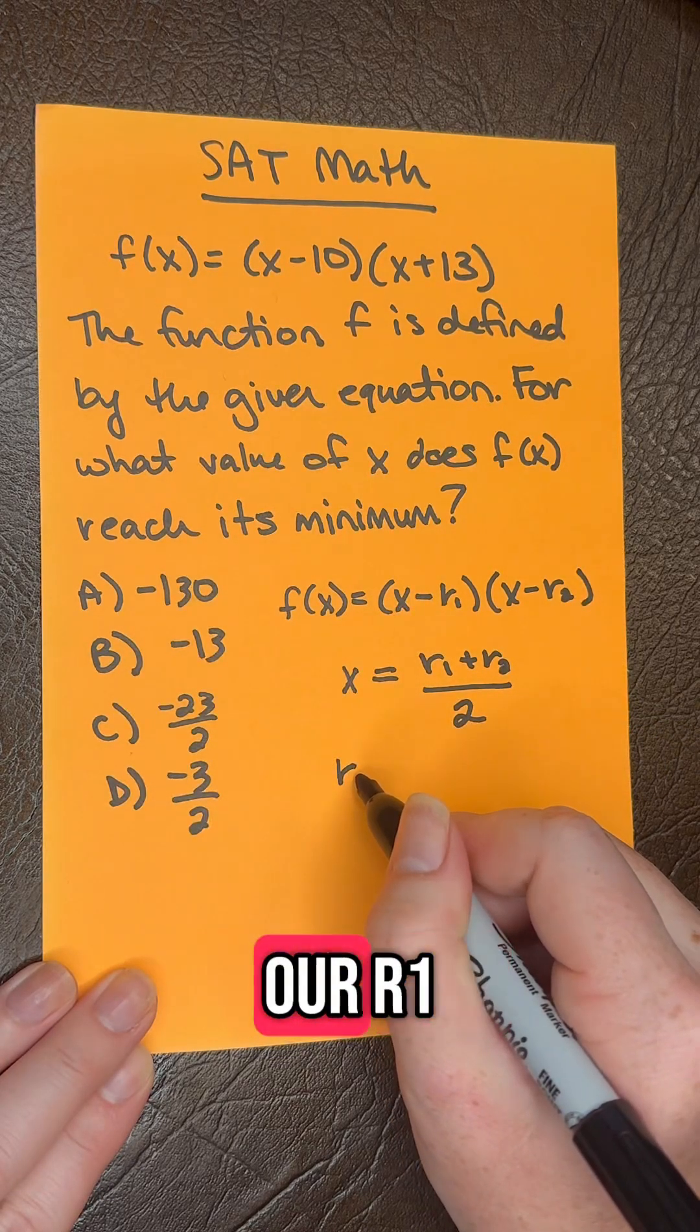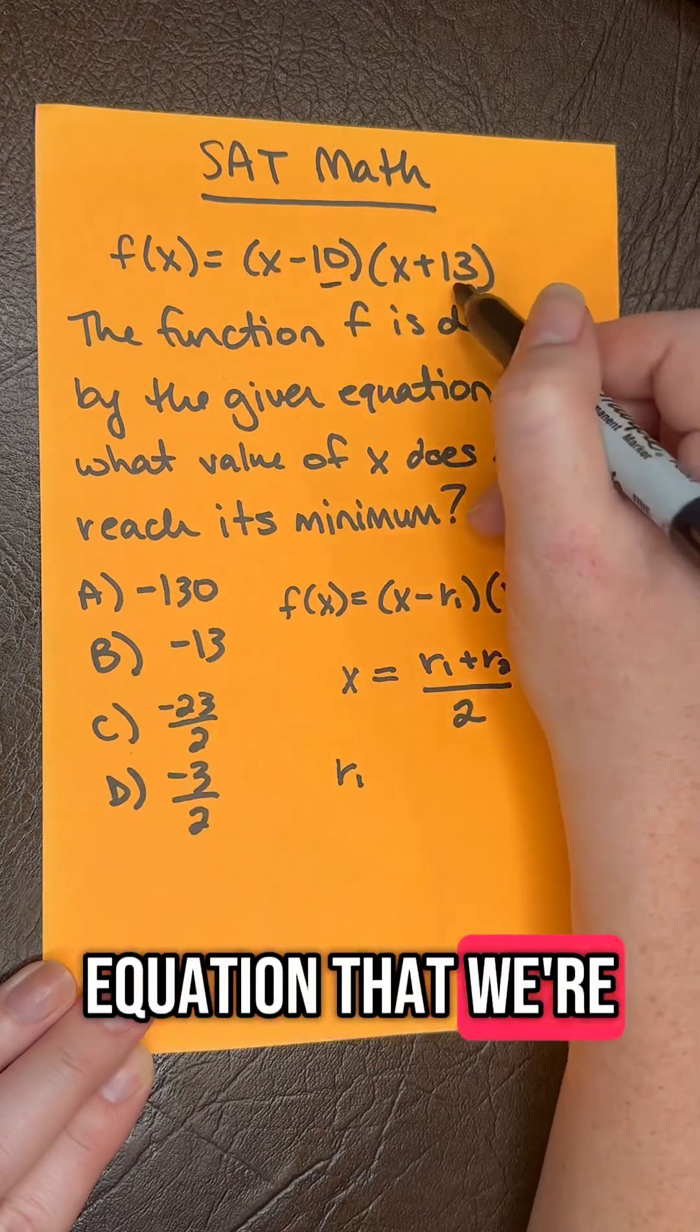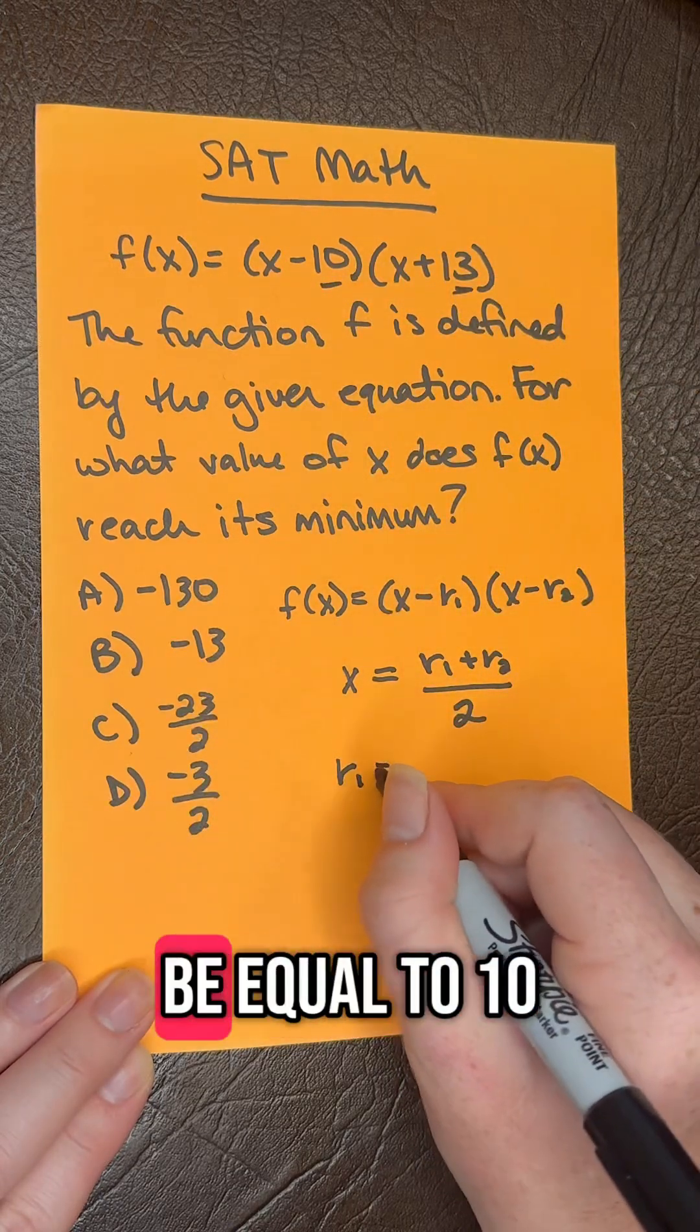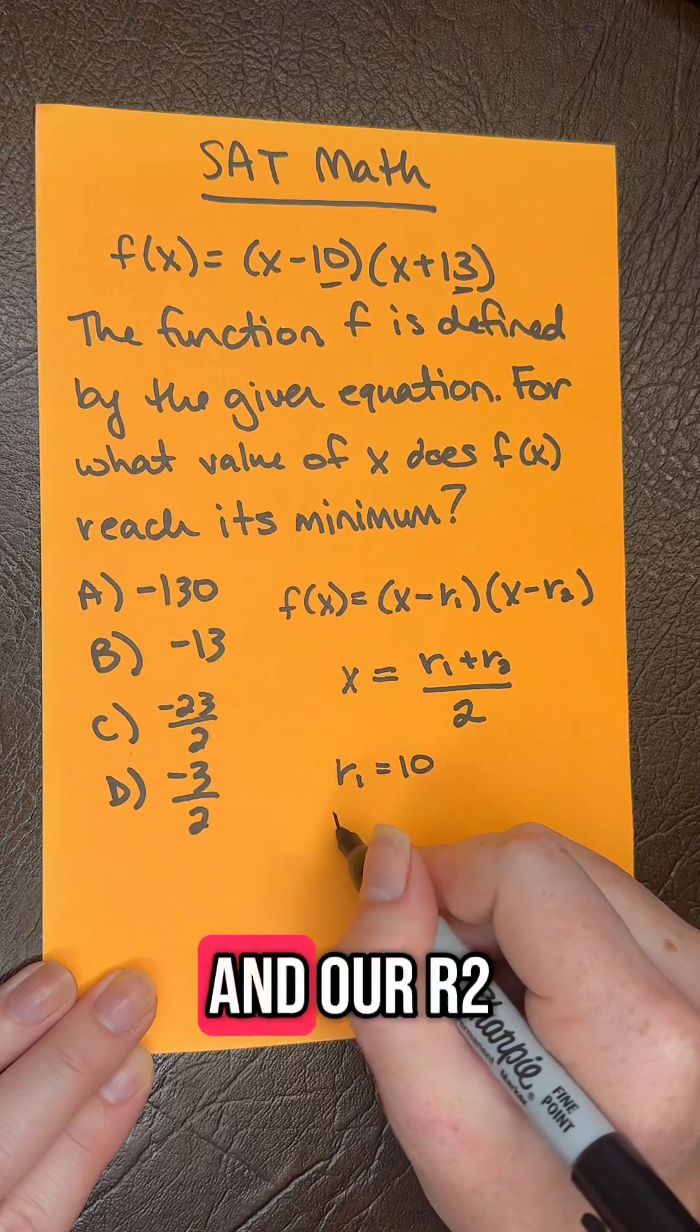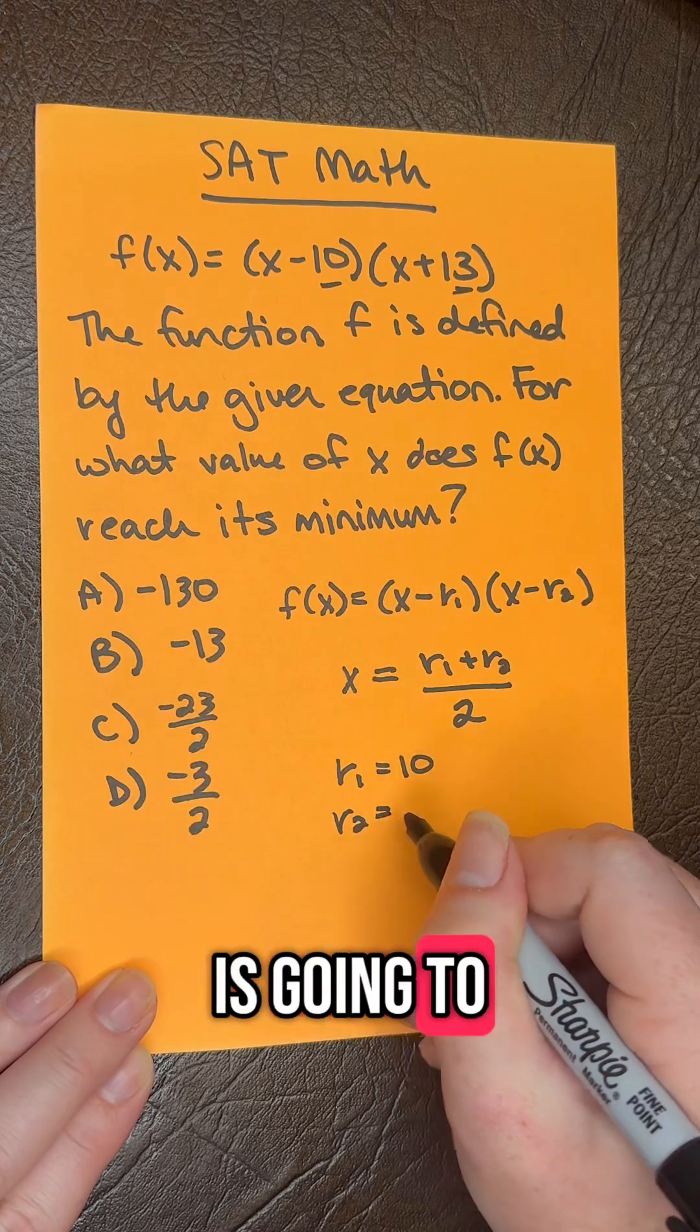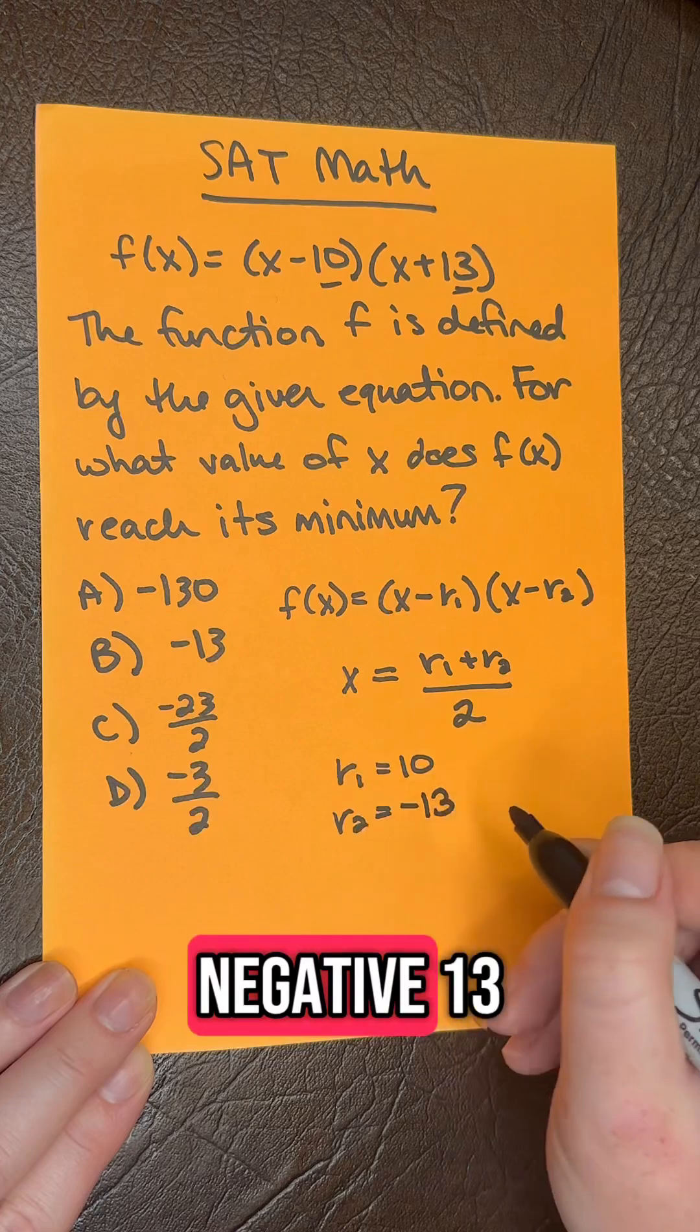So we know in this case, our r1, based on the equation that we're given here, is going to be equal to 10. And our r2 is going to be equal to negative 13.